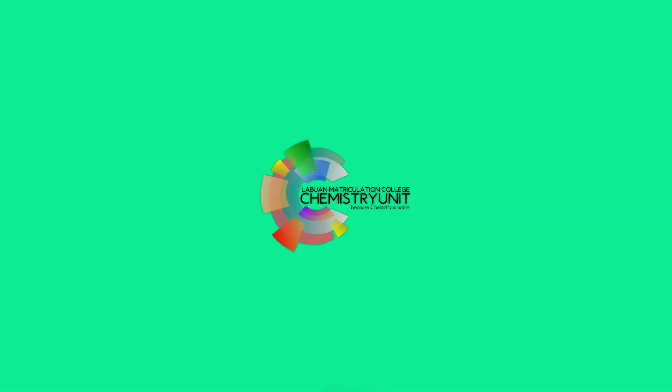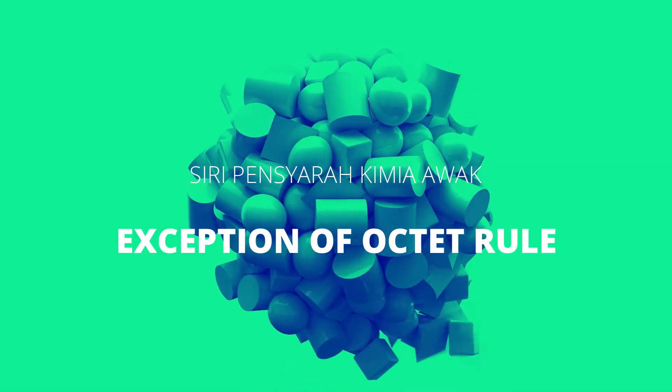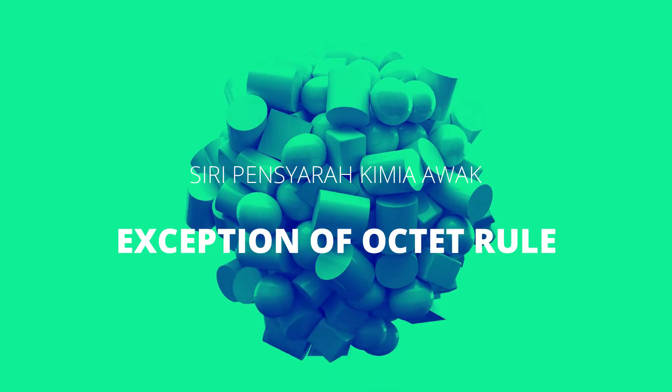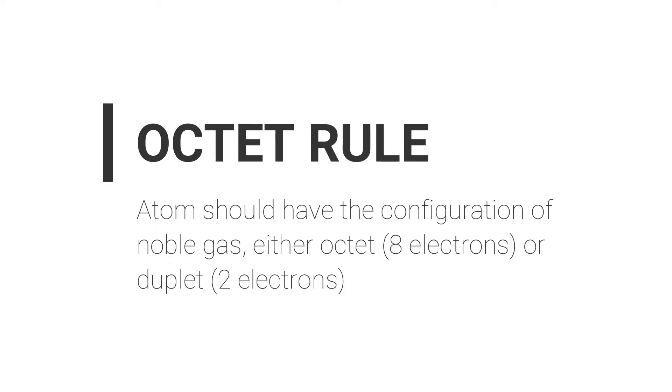Naturally, some compounds are stable even though the central atoms do not fulfill the octet configuration. According to the octet rule, atoms should have the configuration of a noble gas, which means they either have an octet of 8 electrons or a duplet of 2 electrons. But there are some exceptions to the octet rule.